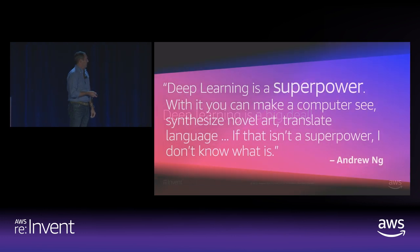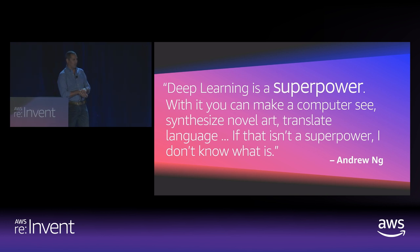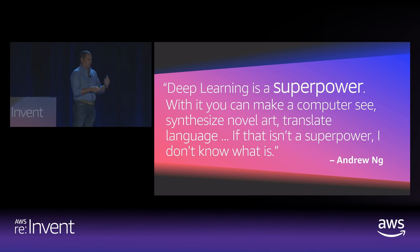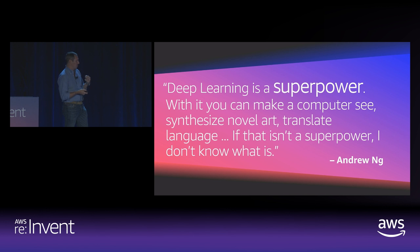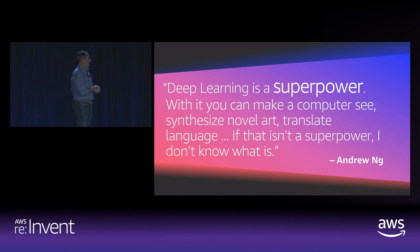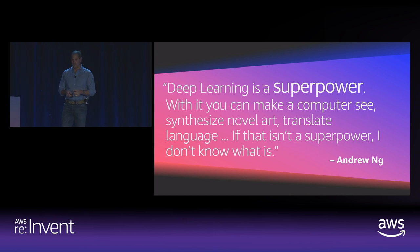Deep learning is a big deal. Andrew Ng, who's really well regarded as a thought leader in deep learning — he was one of the original founders of Google Brain, then went on to found Coursera and was a professor at Stanford — he basically views deep learning as a superpower. You can do synthesizing art from images, machine translation, and a whole number of almost magical things with machine learning.